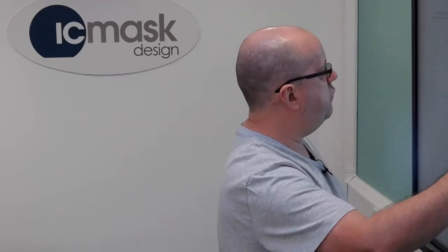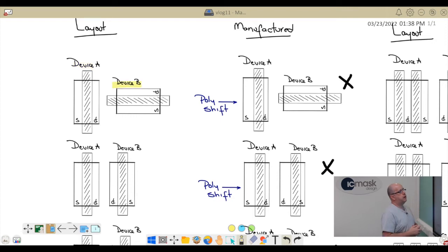I have a simple example here where we have two devices, device A and device B, and we're going to look at what happens as a mask shifts using polymask. We have a poly shift due to a mask misalignment issue. In this case, because it's a self-aligned process, the source of A gets bigger, the drain of A gets smaller, and device B is largely unaffected.